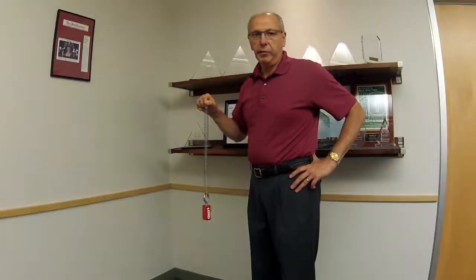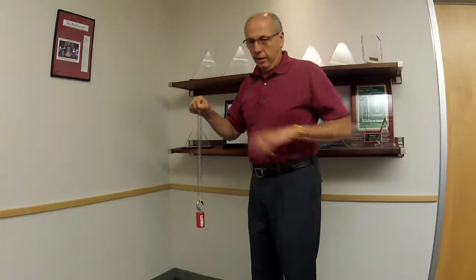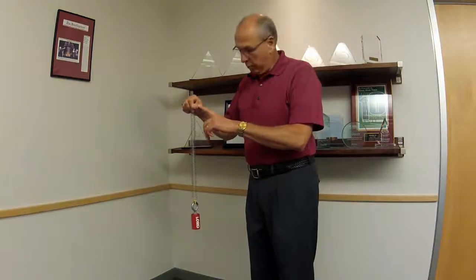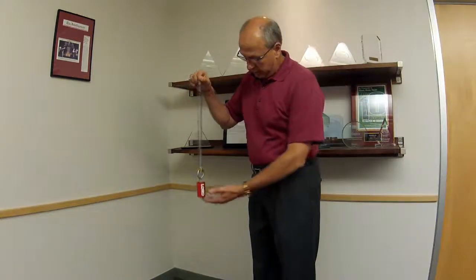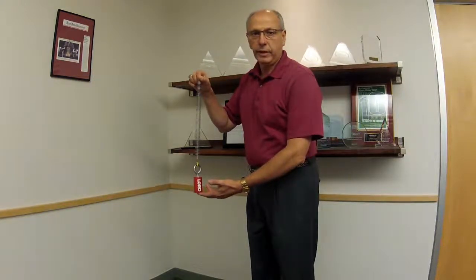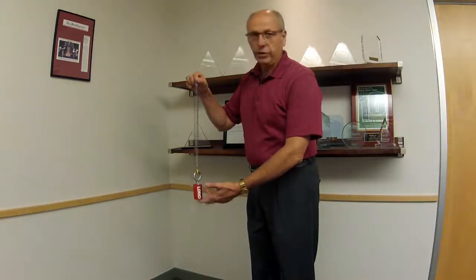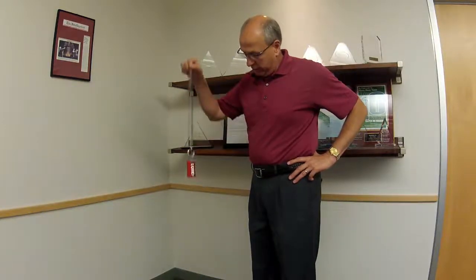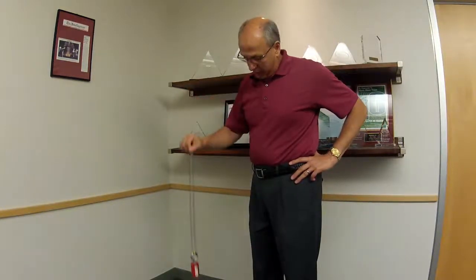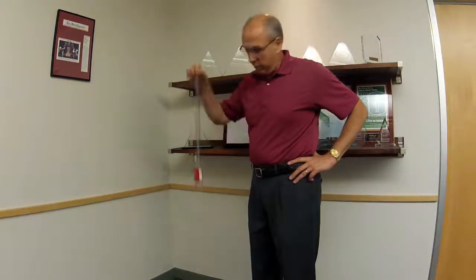Transmissibility is the ratio of output to input. In this demonstration, my hand will be the input, the metal spring will be the isolator, and the mass, m, is one pound. In this demonstration, I will show transmissibility of one. Input and output are the same. One input in my hand is giving the mass one input.